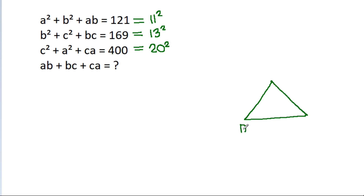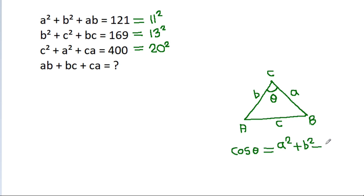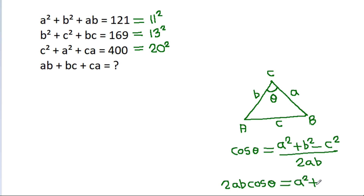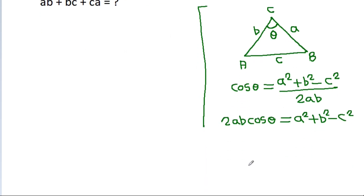In any triangle ABC with side lengths A, B, C, if this angle is theta, then cos(theta) equals (A² + B² - C²) / (2AB). Cross-multiplying gives 2AB·cos(theta) = A² + B² - C², so C² equals A² + B² - 2AB·cos(theta).